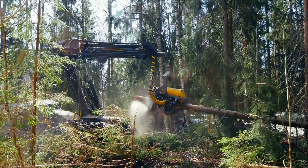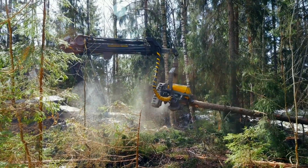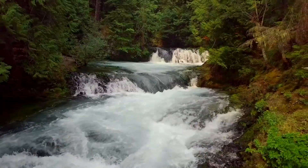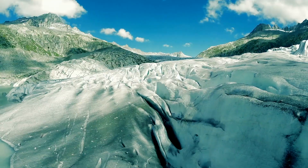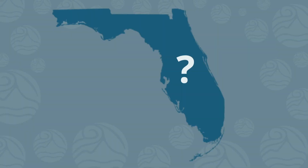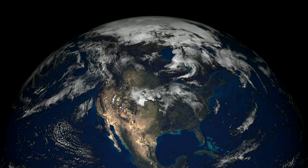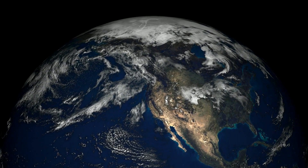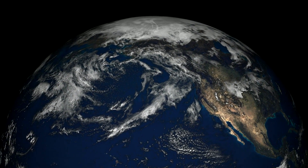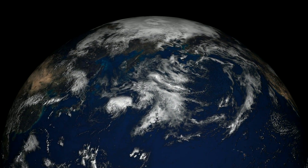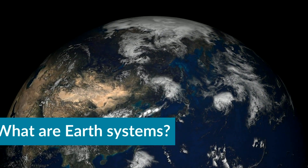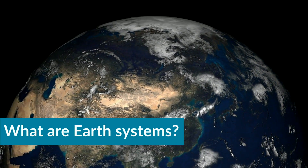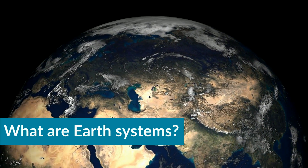How does upland deforestation impact water quality downstream? How do melting glaciers in the Arctic affect sea level in Florida? The field of earth system science can help answer these complicated global questions. But what are earth systems and why are they so important?